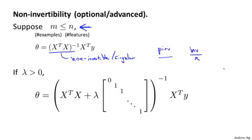Fortunately, regularization also takes care of this for us. And concretely, so long as the regularization parameter lambda is strictly greater than zero, it is actually possible to prove that this matrix, X transpose X plus lambda times this funny matrix here, is possible to prove that this matrix will not be singular, and that this matrix will be invertible. So using regularization also takes care of any non-invertibility issues of the X transpose X matrix as well.